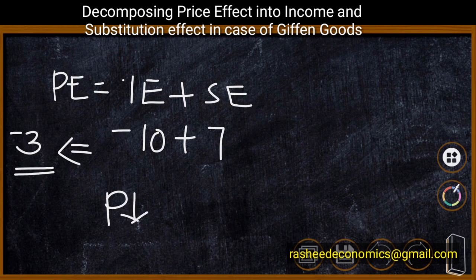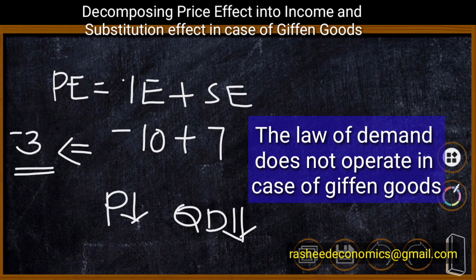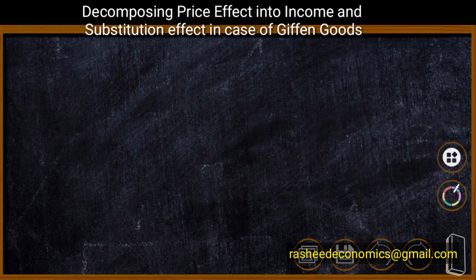Therefore, if the negative income effect is stronger than the positive substitution effect, price effect will be negative. In such a situation, when the price of a commodity decreases, quantity demanded also decreases. Normally when price decreases quantity demanded increases, but in case of Giffen goods the law of demand does not operate.